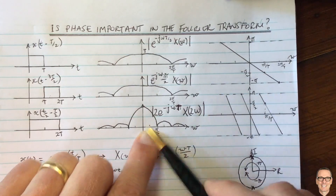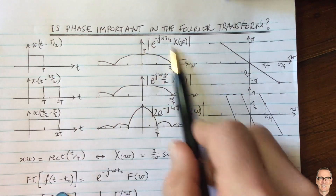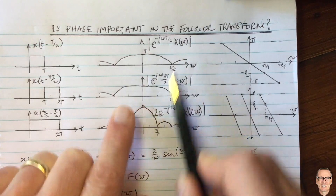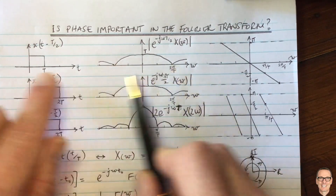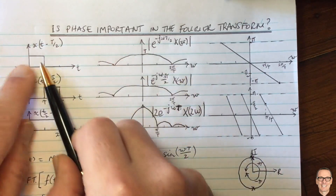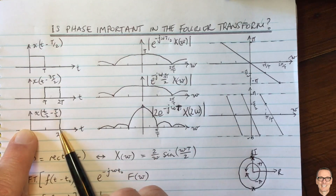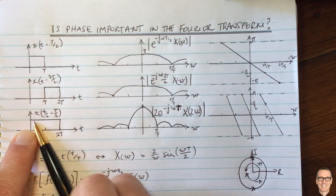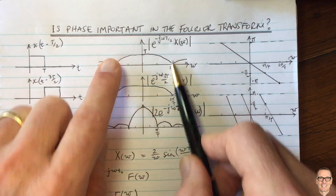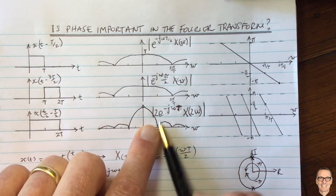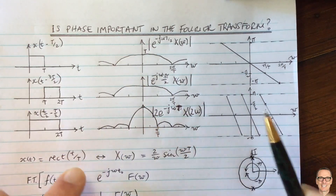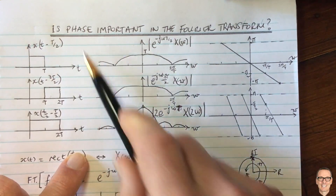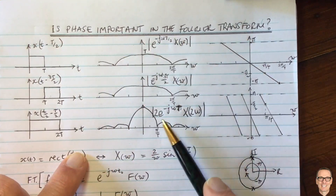Hopefully, by looking at the phase and understanding that these magnitude plots — which are commonly the only thing plotted in textbooks — show you only half the picture. When you want to understand how two broadband digital signals add together to give a signal with half the bandwidth, you only understand that they do when you understand the phase. The answer is: yes, the phase is always important in the Fourier transform.